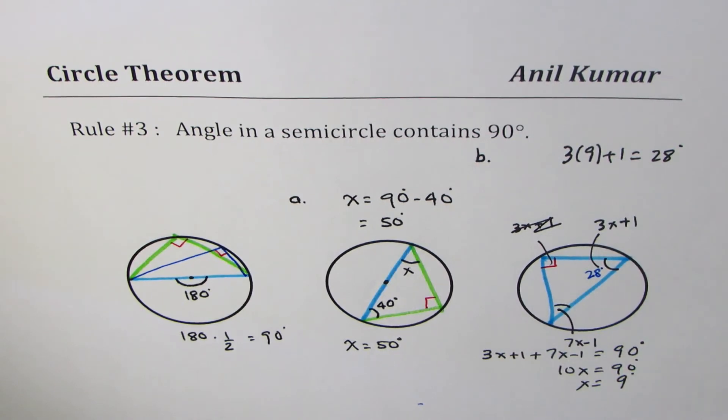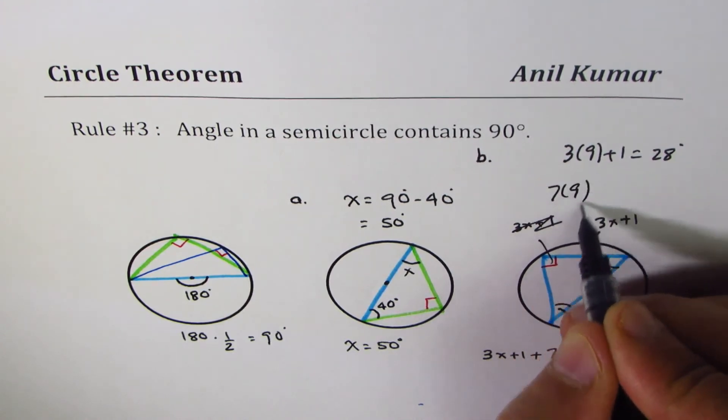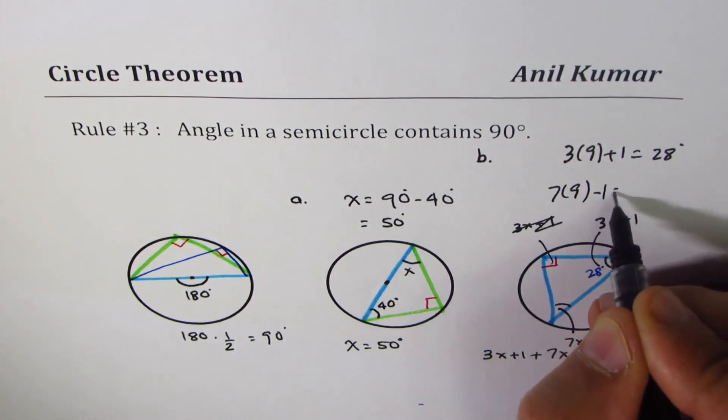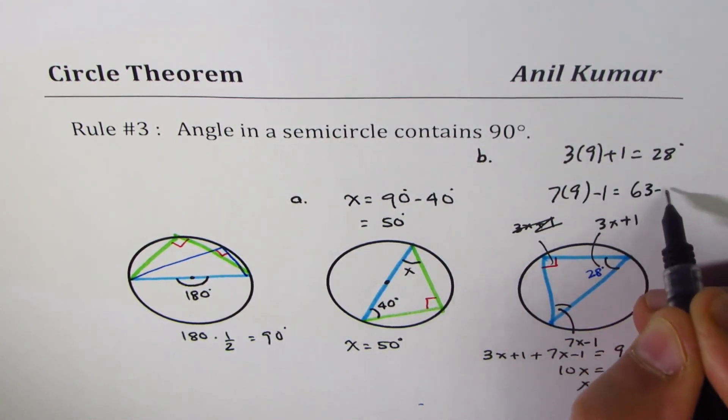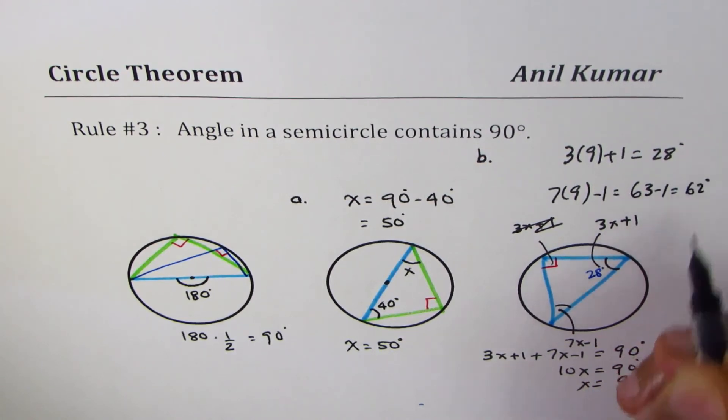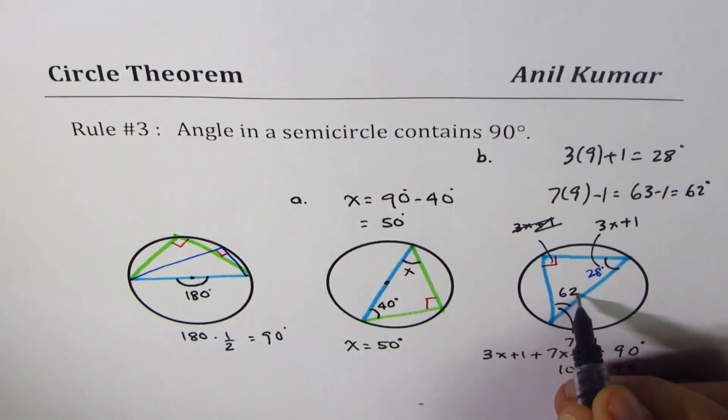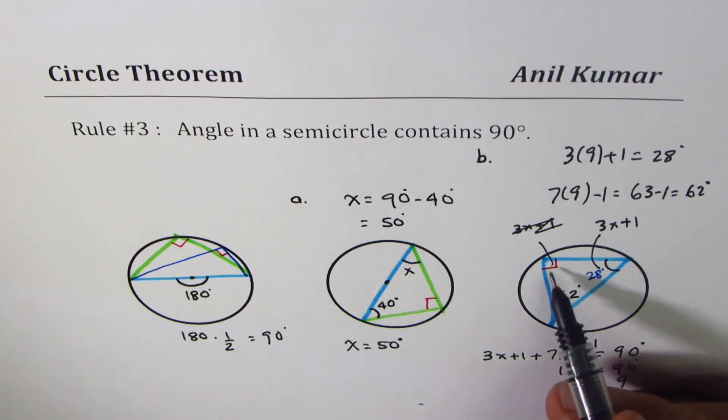The other one will be 90 minus 28, or 7 times 9 minus 1, which is 63 minus 1, which is 62 degrees. So this will be 62 degrees, and when you add them you get 90, and the other angle is 90 degrees.